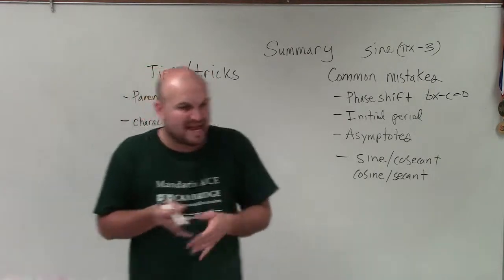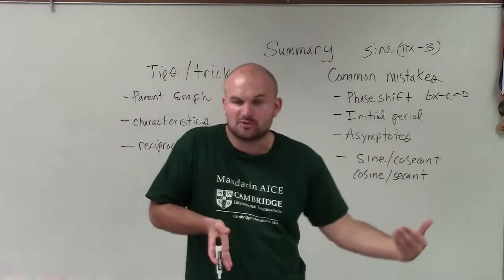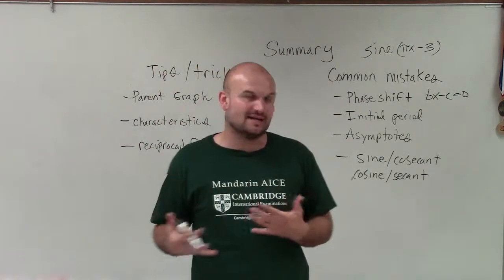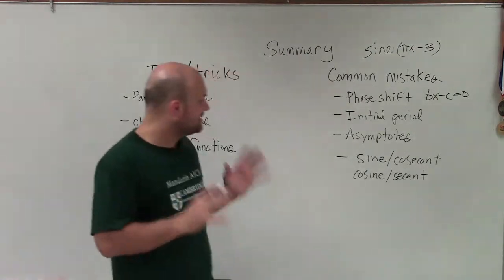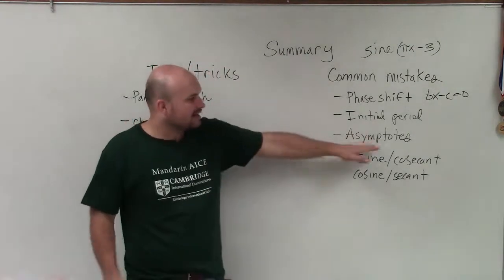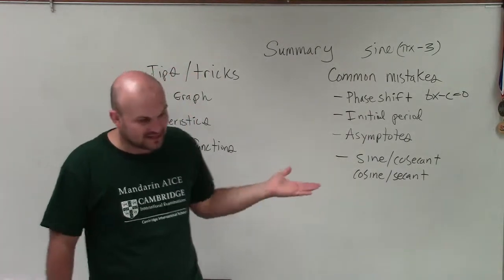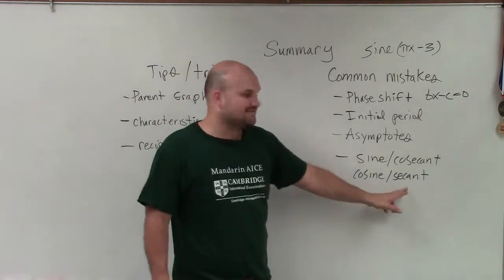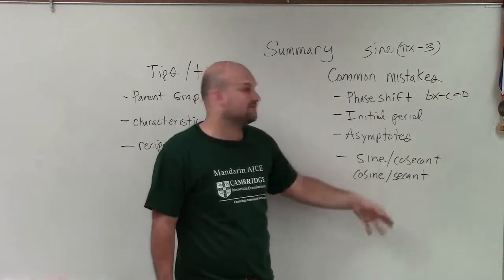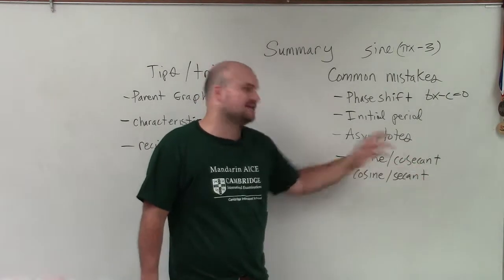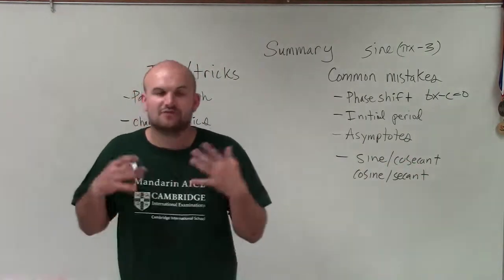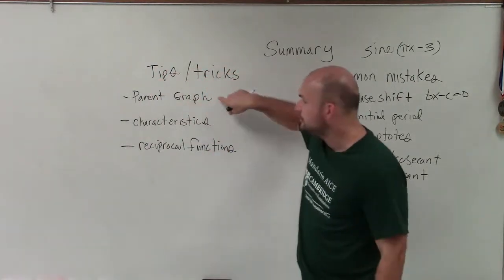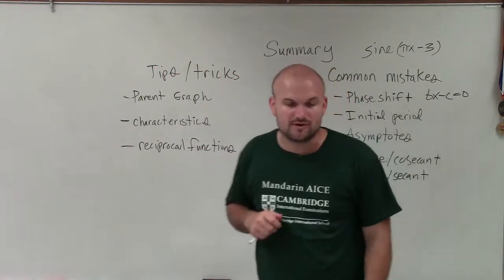Students still make mistakes — they make asymptotes where there should be max or min points, and they don't start at the right initial period values. The other most common mistake is when students have secant, they graph the reciprocal of sine instead of cosine; and when they have cosecant, they graph the reciprocal of cosine instead of sine. It's very important to know your parent graphs as well as your reciprocal functions.